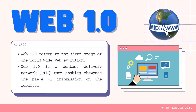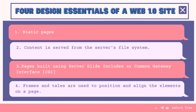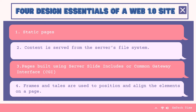Web 1.0 is a content delivery network, or CDN, which enables showcasing pieces of information on the website. It can be used as a personal website. It costs to use as per page per view. It has a directory which enables users to retrieve a particular piece of information. The four design essentials of Web 1.0 include: static pages; content served from the server's file system; pages built using server-side includes or Common Gateway Interface, or CGI; and frames and tables used to position and align elements on a page.